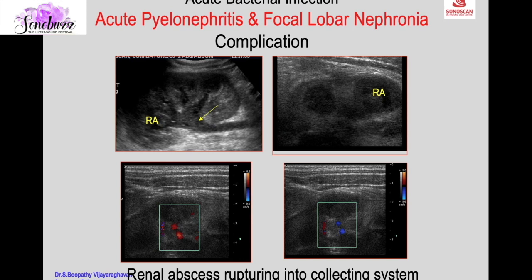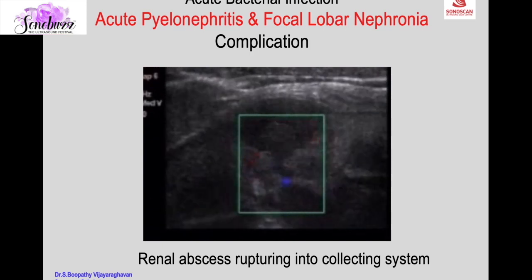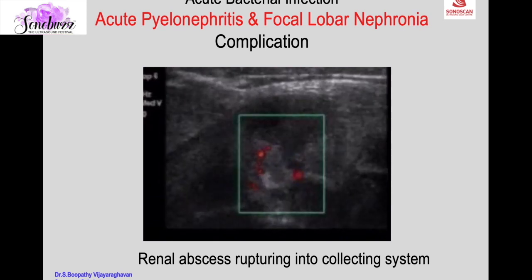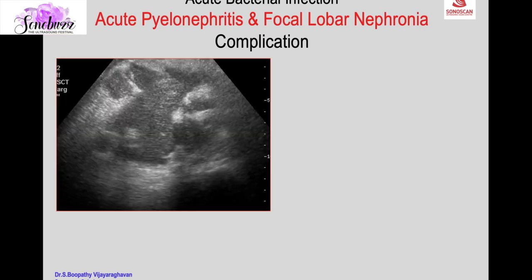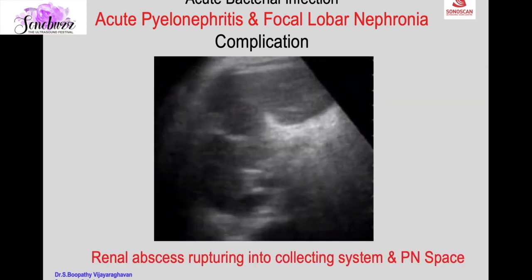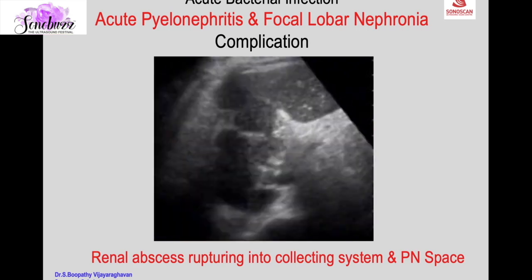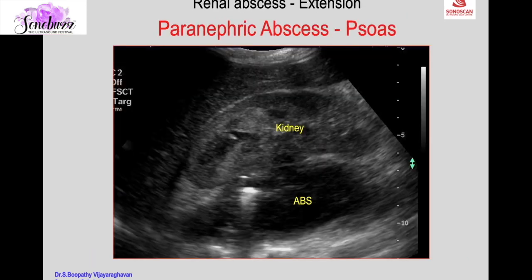The communication between the renal abscess and the calyx can be demonstrated with color Doppler using a press-release movement showing alternating red and blue. The abscess can rupture both into the collecting system and the perinephric space, with real-time showing movement of debris from the perinephric space into the collecting system and the abscess. It can extend further outside the kidney as a perinephric abscess extending into the psoas muscle.